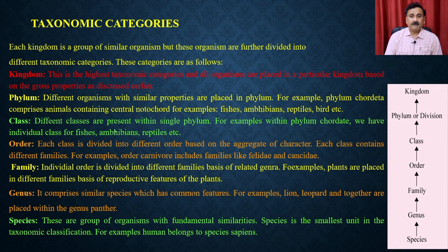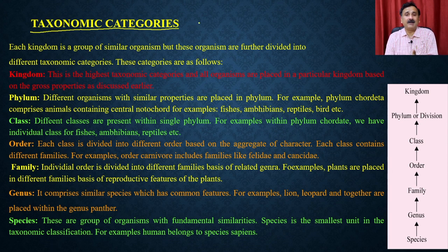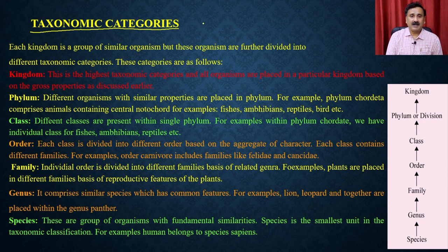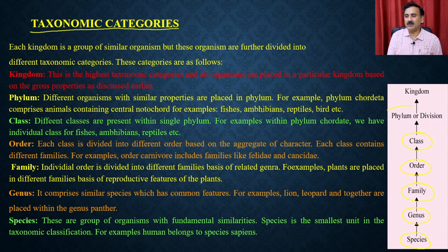Beyond the kingdom level, organisms are also categorized into different taxonomic categories. From smallest to largest: species, genus, family, order, class, phylum or division, and kingdom. The smallest unit is species and the largest is kingdom. Species are groups of organisms with fundamental similarities — for example, humans belong to the species sapiens.